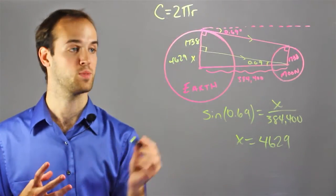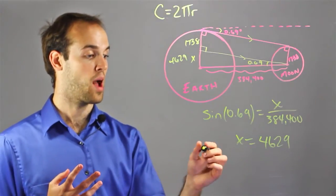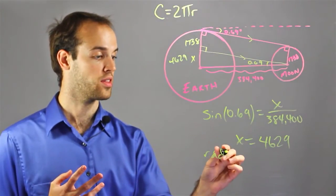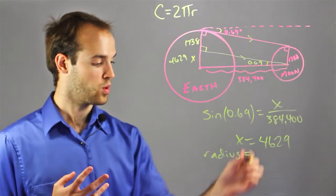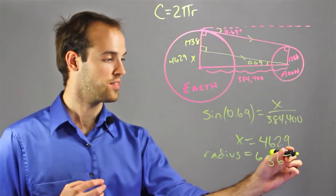So now I have both parts of my radius. I have my 4629 and my 1738. And if I add them together, I'm going to get the radius of the Earth, which is 6367 kilometers.